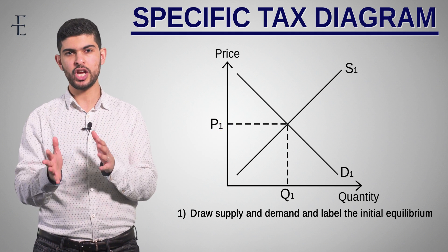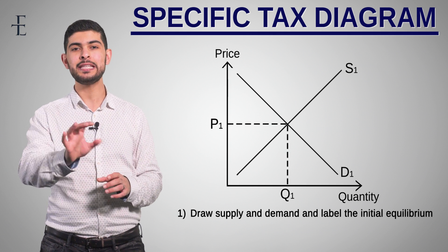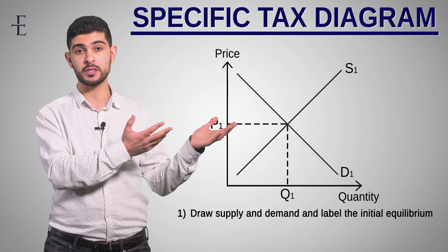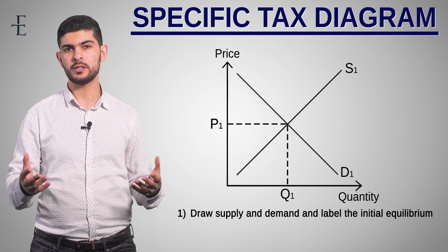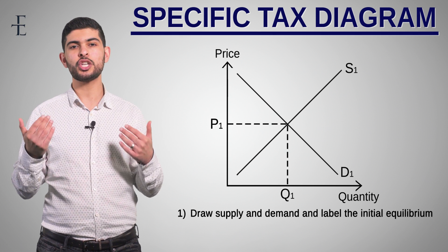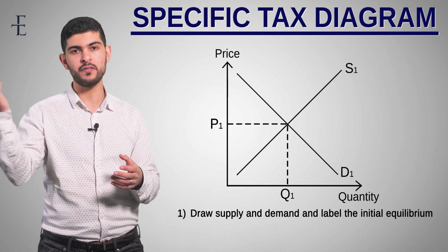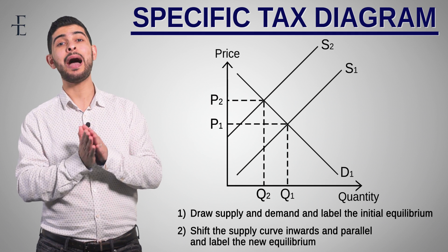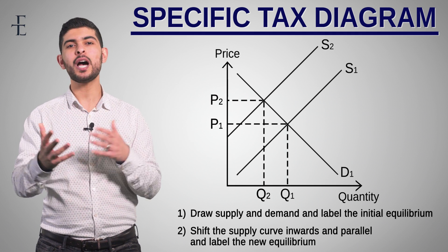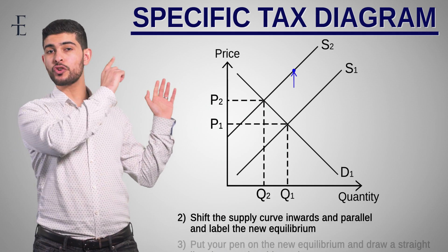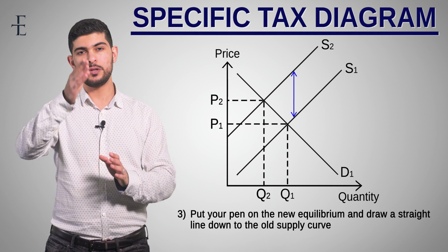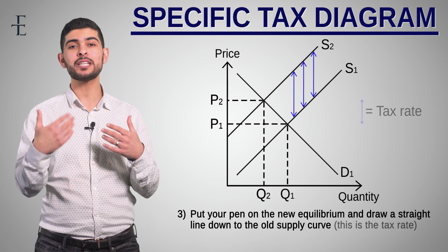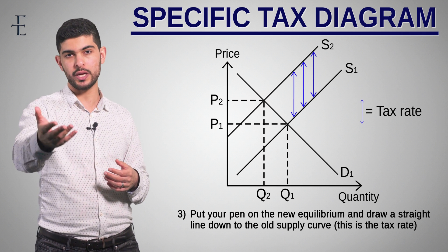The producer will price this in, so their prices are obviously going to change when there's a higher tax. The key thing to understand is that an indirect tax will always shift the supply curve, because the producer is the one that has to give the money over to the government. Supply is going to shift inwards, because the tax is like an additional cost to the firm. If it's a specific tax, it shifts inwards and parallel — that's how you know it's a specific tax. The vertical distance between the new and old supply curve represents the tax rate, i.e., how much the government is taxing per unit.